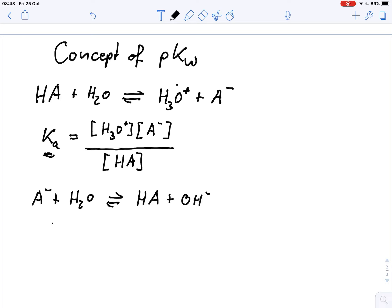And we can write Kb in this case equals concentration of the acid times the concentration of the OH minus divided by the concentration of A minus. And again the water is included here.